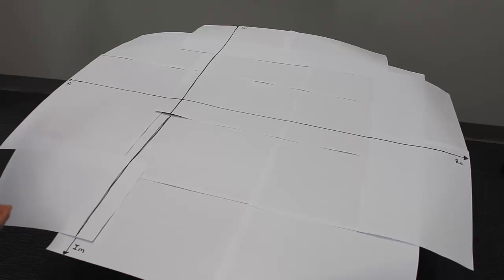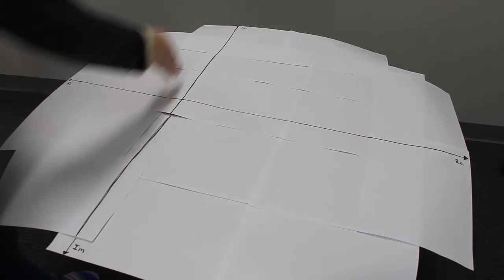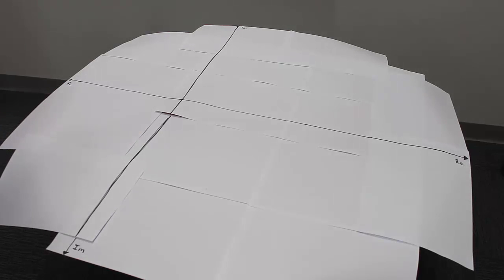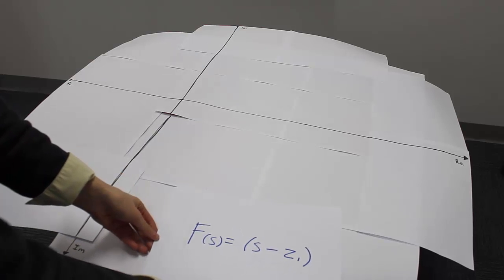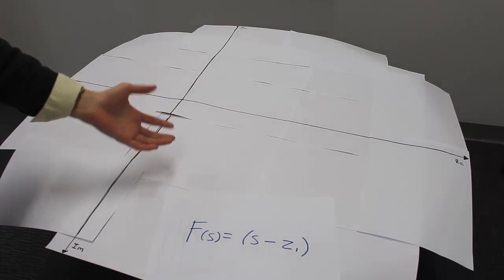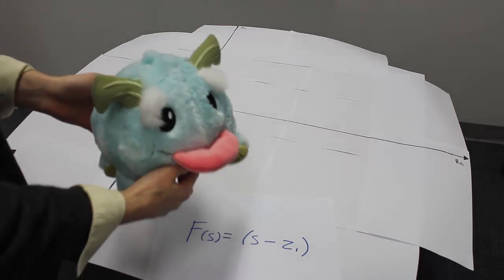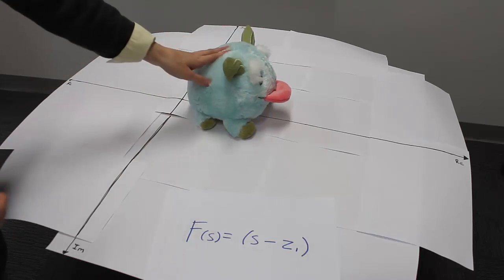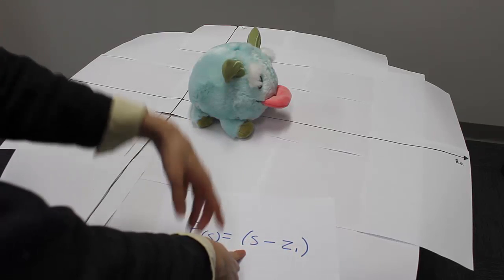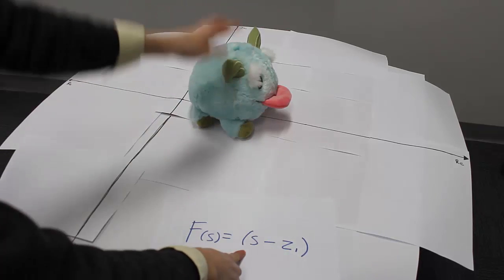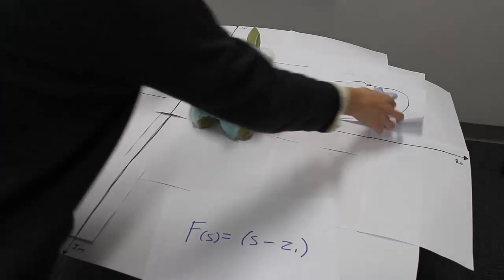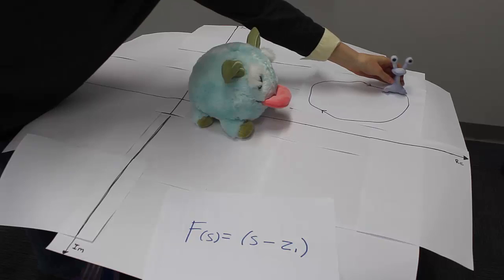Here we have a makeshift S-plane with the imaginary axis (positive and negative) and the real axis (negative and positive). We're going to look at the contour paths for a few functions, starting with F of S equals S minus Z1. We'll use an analogy: the zero location is the location of Poro. Poro is slightly positive on the real axis and looking outward. This can be thought of as a vector on the S-plane from Z1 — wherever Poro is looking. Valerie walking a certain path represents the input contour.